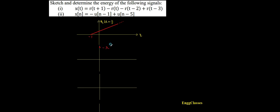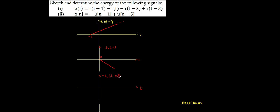Similarly, I need to sketch the next signal, which is minus r(t). Whenever we get ramp signals it is always better to add them up. r(t) looks like a standard ramp, and minus r(t) is the flipped version of that signal. This is how minus r(t) looks — it exists at position zero and goes to infinity.